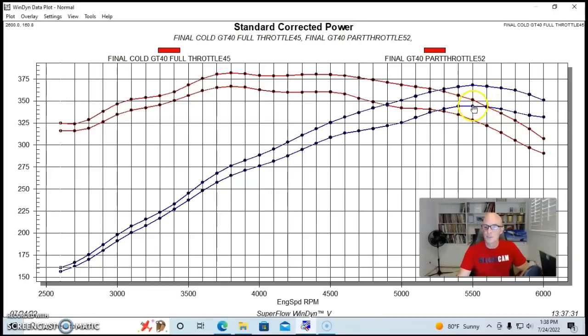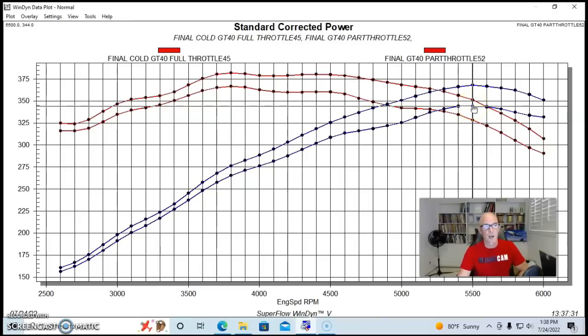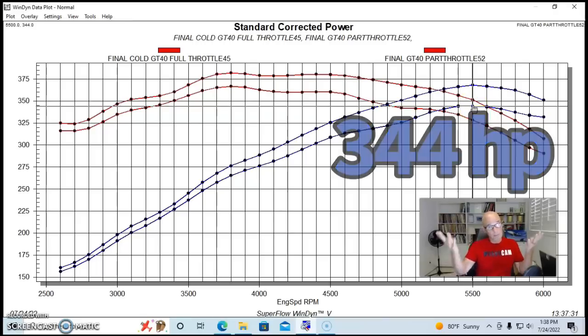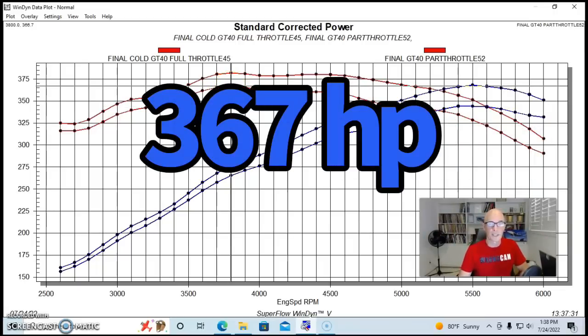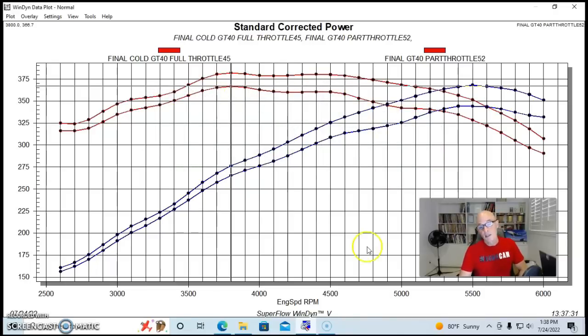And we see the peak power at 50% throttle measured 344 horsepower, still not too bad. So making decent power, even at part throttle and peak torque checked in at 366.7 foot pounds of torque. Lucky for us in this combination, our peak torque occurred fairly low in the RPM range before the airflow demand is really great. So they were fairly comparable, even at 50% throttle.